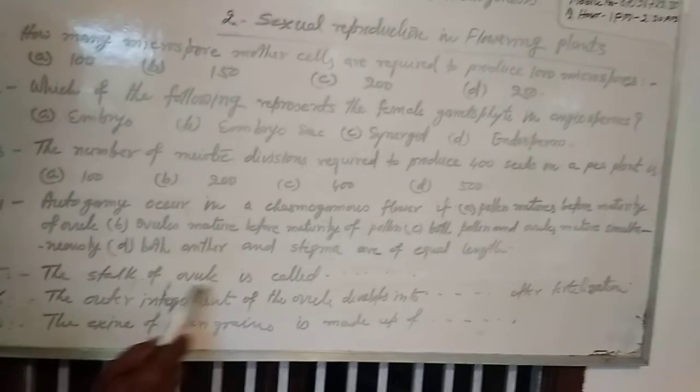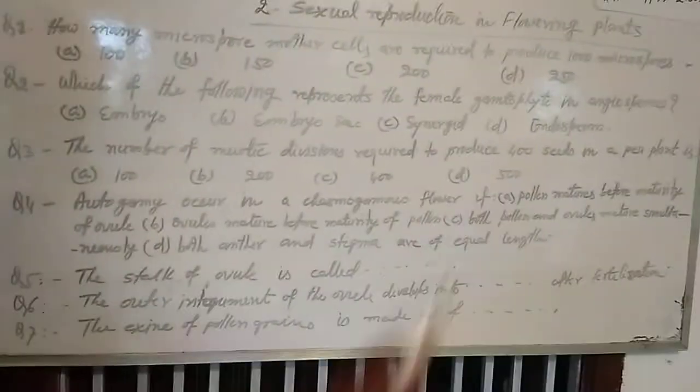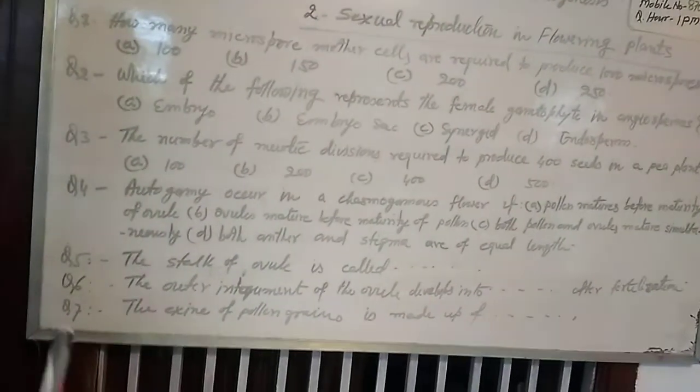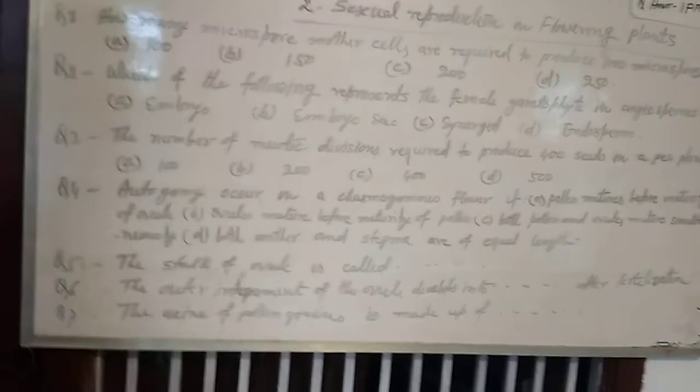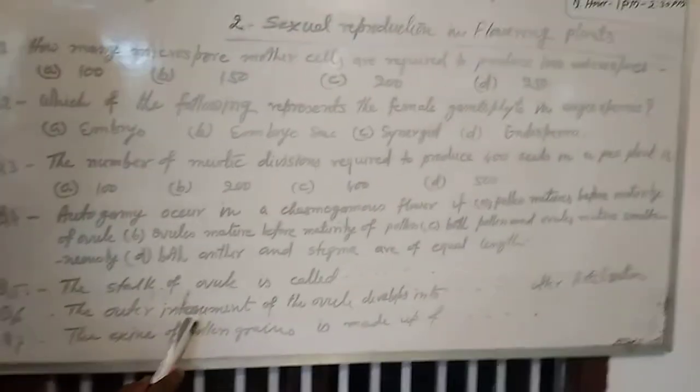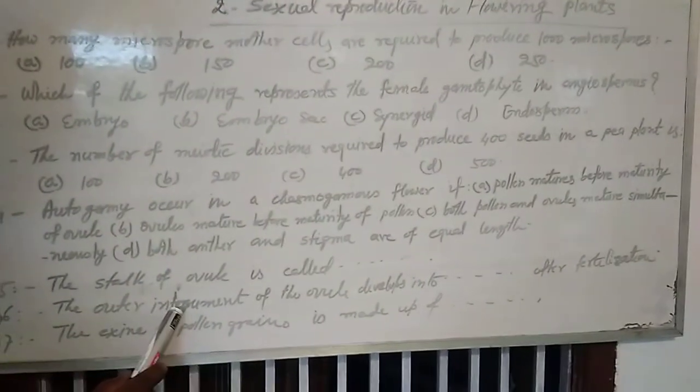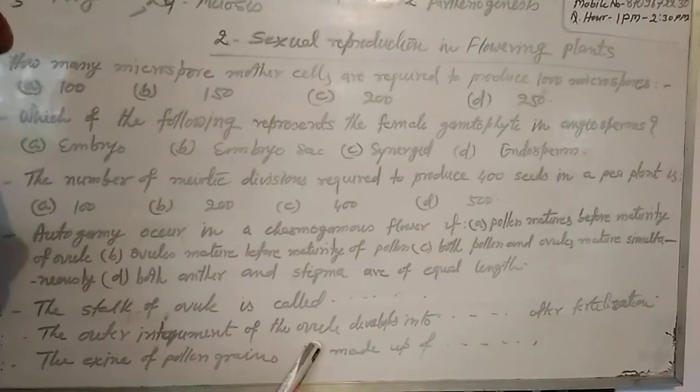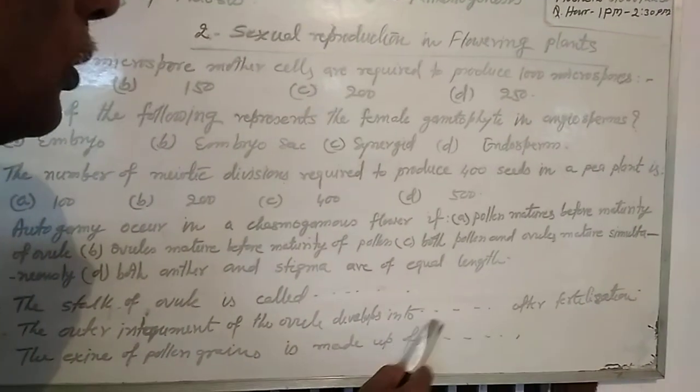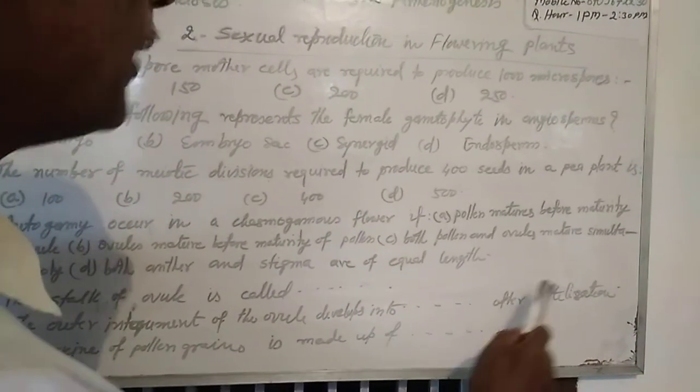Question 5. The stock of ovules is called [blank]. Question 7. The outer integuments of the ovules develops into [blank] after fertilization.